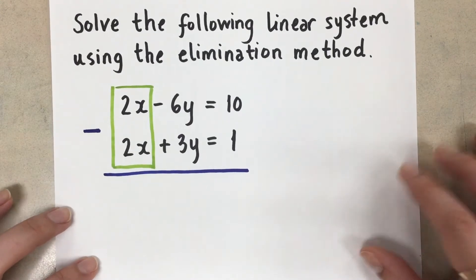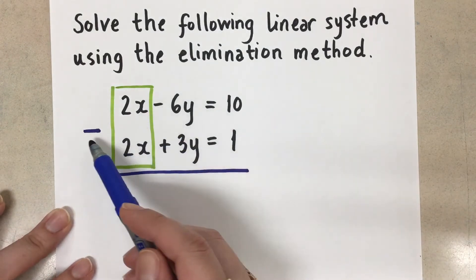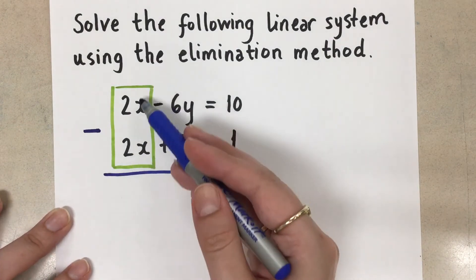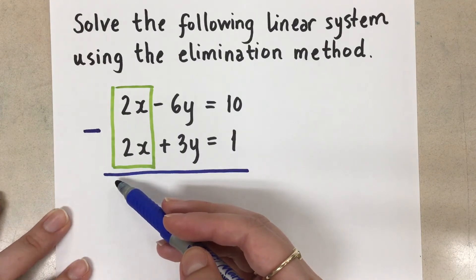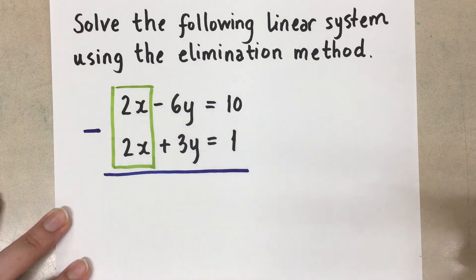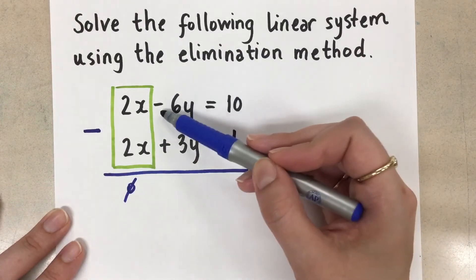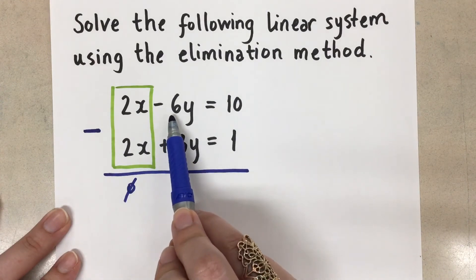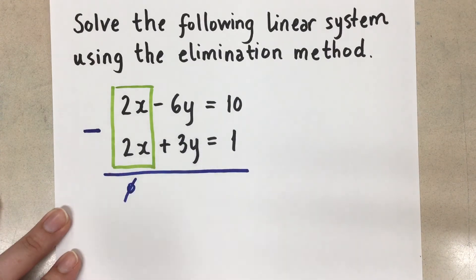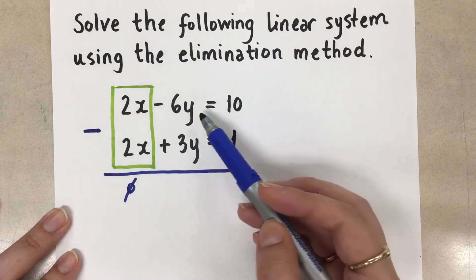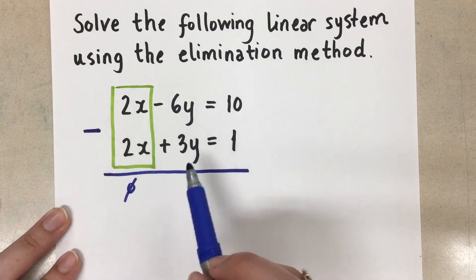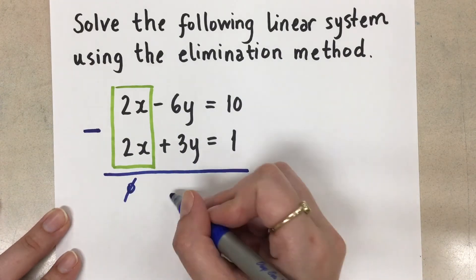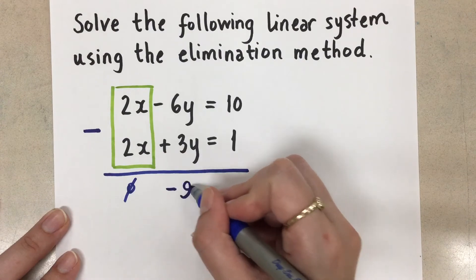So let's go ahead and subtract the two equations. 2x minus 2x is zero. So that term has been eliminated and that's exactly what we want to happen. So that's a zero there. Let's go to the next column. Negative 6y minus 3y. So negative 6 minus positive 3. I'm going to say that again. Negative 6y minus positive 3y. And that is negative 9y.